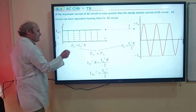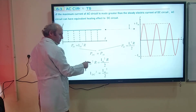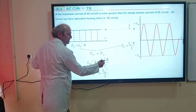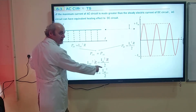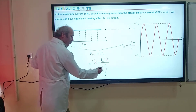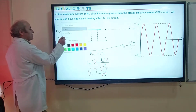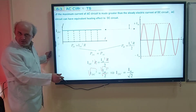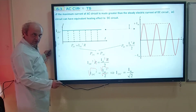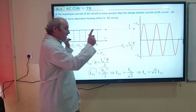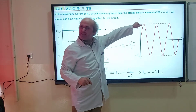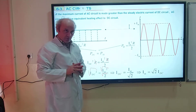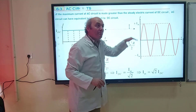Let's equalize them. Power of DC equals power of AC. So: IDC squared times R equals IM squared R divided by 2. This R simplifies on both sides, giving IDC squared equals IM squared over 2. Taking the square root of both sides: IDC equals IM divided by root 2. Or by cross multiplication, IM equals root 2 times IDC. So IM must be root 2 times IDC for the powers to be equal.